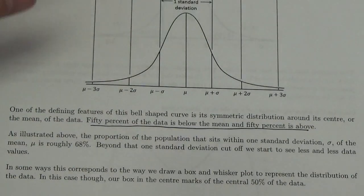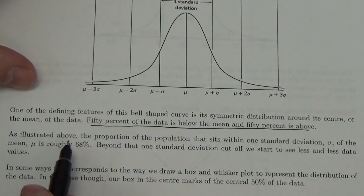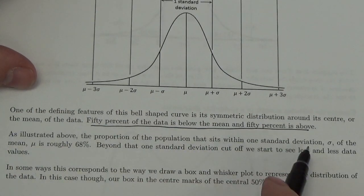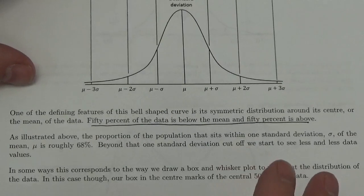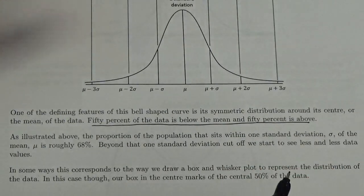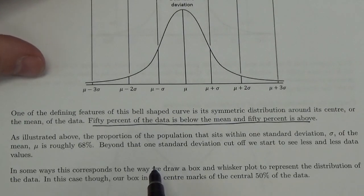But there's something familiar about this. What it says here is, as illustrated above, the proportion of the population within one standard deviation is roughly 68%. Well, maybe that's not quite the clear connection that I want, but it's close to something we've seen before here.